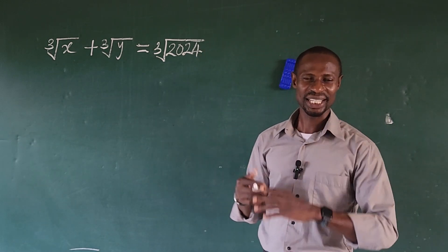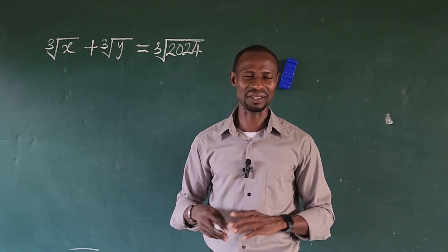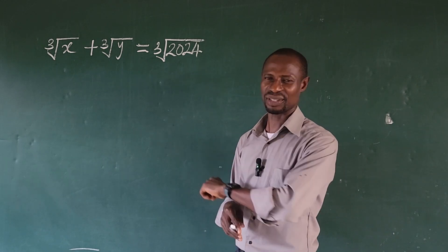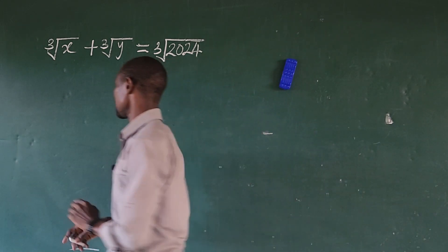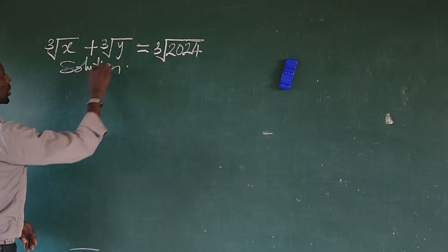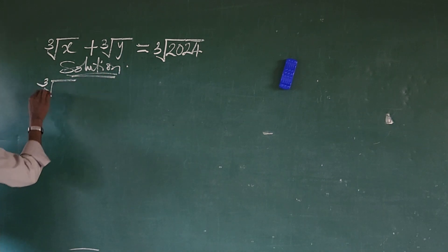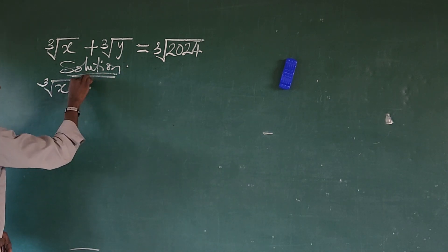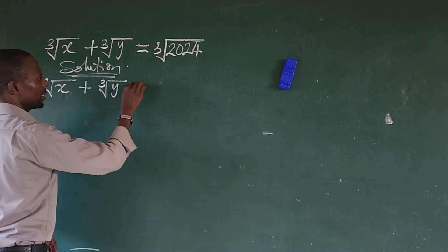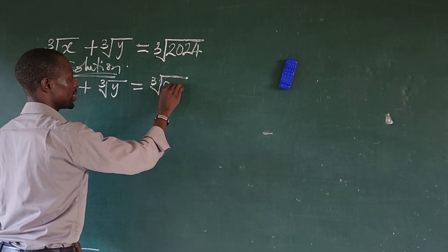So how do we solve for the values of x and y in this challenge? It's very easy. I'm going to take you on a step-by-step guide on how to solve this. If you're new to this, this is Online Math TV — if you're not subscribed, it's a new year, so go ahead and subscribe. So we have the cube root of x plus the cube root of y equal to the cube root of 2024.